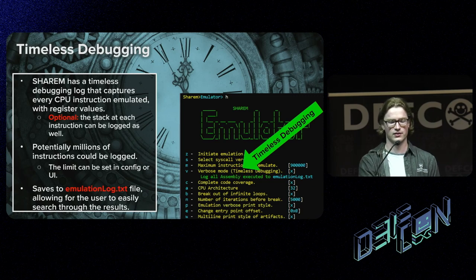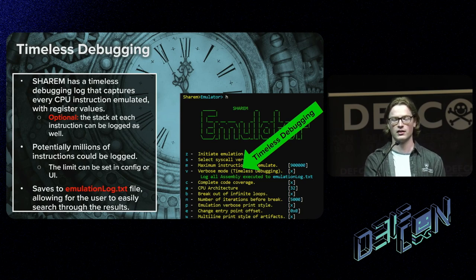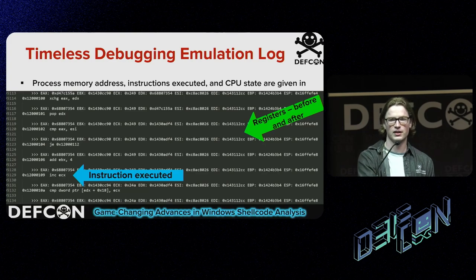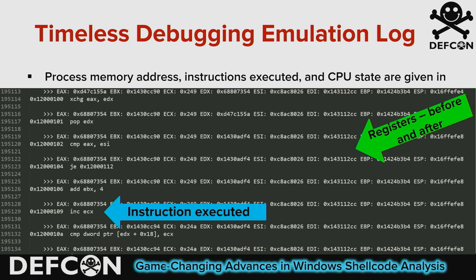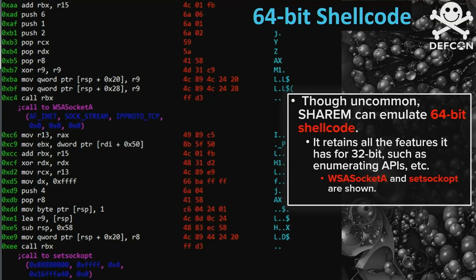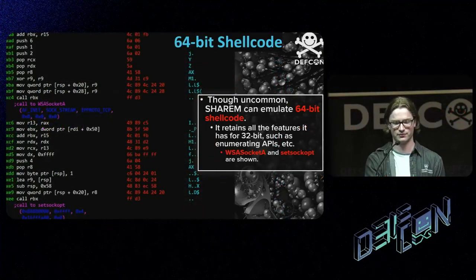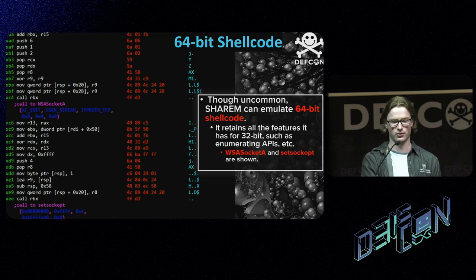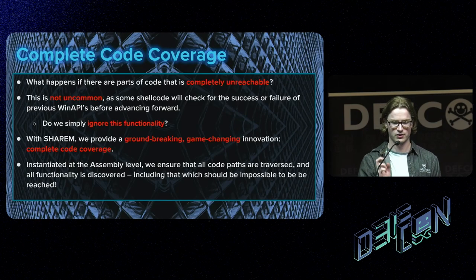Sherem also includes timeless debugging — a log of every CPU instruction emulated along with register values before and after each execution. This is useful for reviewing specific instructions and evaluating register state. There's also an option to view selected bytes from the stack. Regarding 64-bit support: our research found that 64-bit shellcode is less common than 32-bit, but Sherem fully supports 64-bit shellcode emulation with corresponding DLLs and internal Windows structures — anything you can do in 32-bit, you can do in 64-bit.